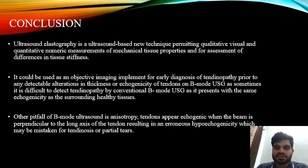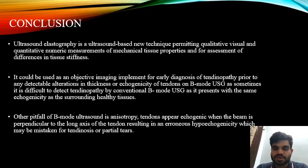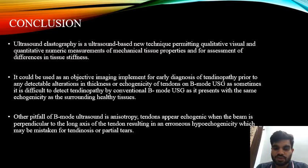Conclusion: Sonoelastography is an ultrasound-based technique permitting qualitative visual and quantitative numeric measurements of mechanical tissue properties for assessment of differences in tissue stiffness. It could be used as an objective imaging tool for early diagnosis of tendinopathy prior to any detectable alterations in thickness or echogenicity of tendons on B-mode USG, since sometimes tendinopathy presents with the same echogenicity as surrounding healthy tissues. Another pitfall of B-mode ultrasound is anisotropy — tendons appear echogenic when the beam is perpendicular to the long axis, resulting in erroneous hypoechogenicity which may be mistaken for tendinosis or partial tears.